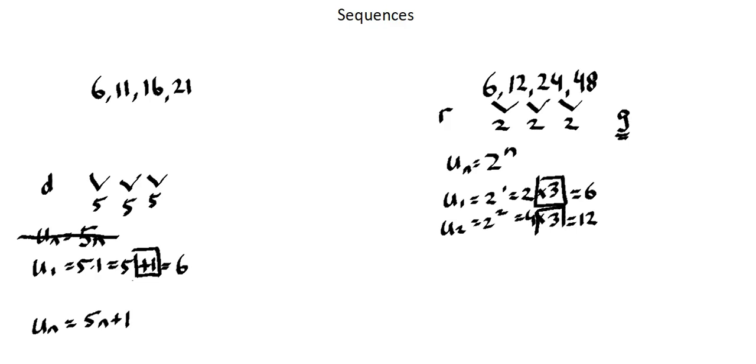And that's how we need to adjust our sequence rule. So our rule is going to be u of n, the general term equals 3 times 2 to the power of n.